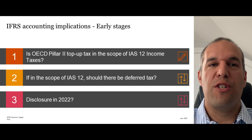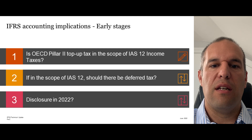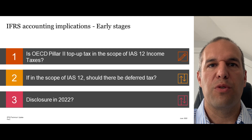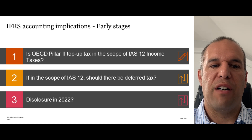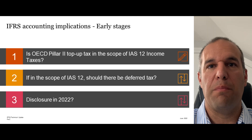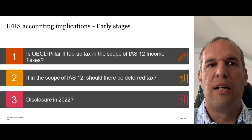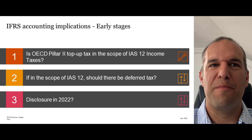Another question is whether, if it is in the scope of IAS 12, you should calculate deferred tax on entities that may be affected by the GloBE rules. This is a really tricky question, made more so because of uncertainties around when and how the tax will reverse in the future, and also because temporary differences in some cases will not have an impact on the amount of future tax you pay in a low tax jurisdiction. This is still a very hot topic and hopefully by the next webcast we'll have a more definitive answer.